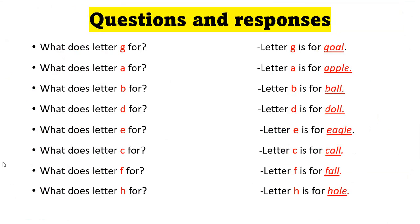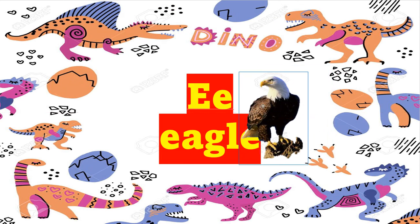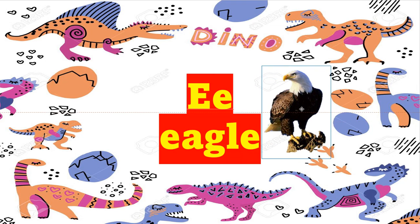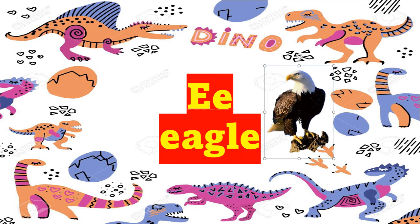We have: what does letter E stand for? You can say or respond: letter E is for eagle. Eagle. This is an animal. May I see the eagle? I don't know what an eagle is. So this is an eagle — it's flying in the sky. You can also find this one in the forest or jungle.